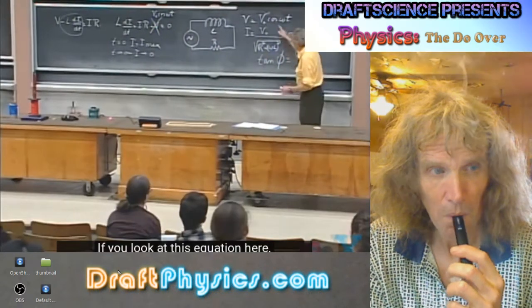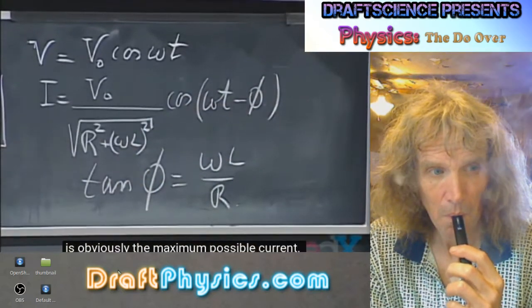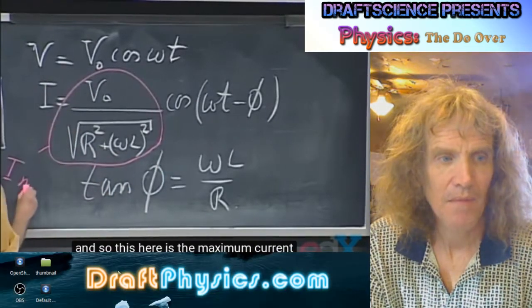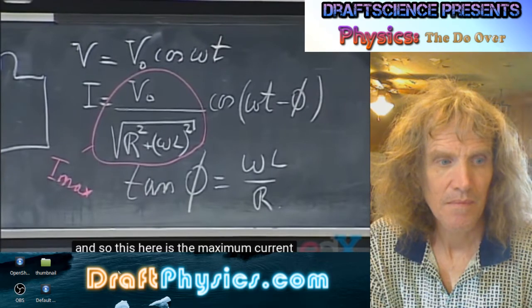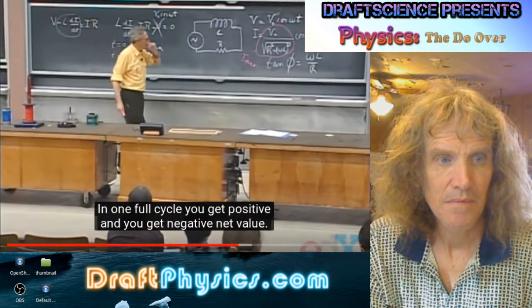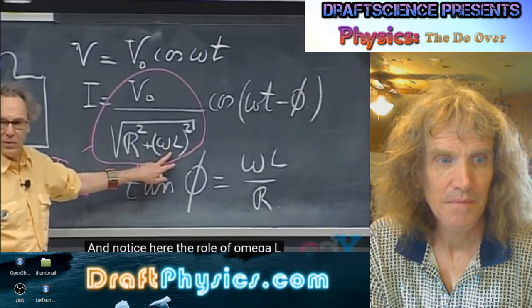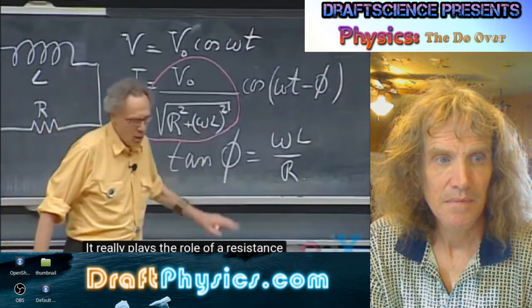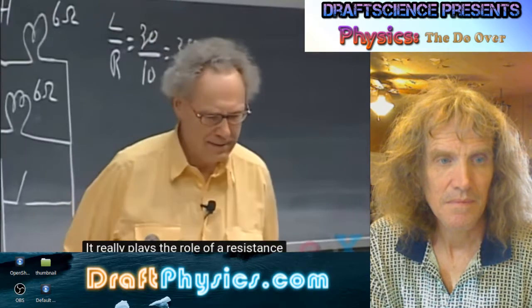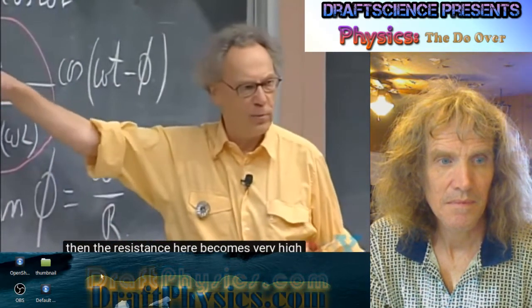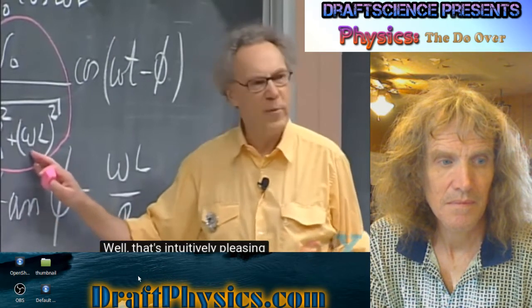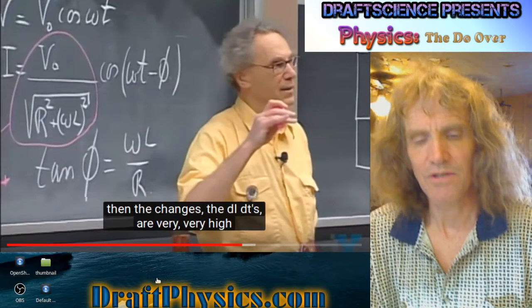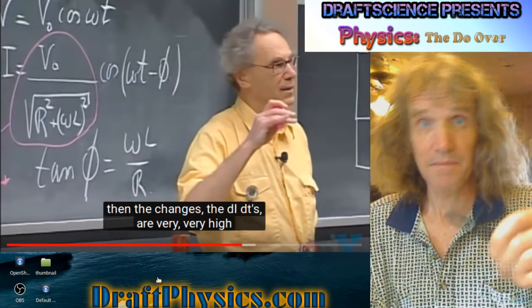Looking at this equation, the amplitude in front of the cosine term is the maximum possible current, since cosine oscillates between plus one and minus one. Notice here that omega L really plays the role of a resistance — in fact, the dimension of omega L is ohms. If omega is very high, the resistance here becomes very high and your current becomes very low. That's intuitively pleasing because if omega is high, then the dI/dt values are very high.